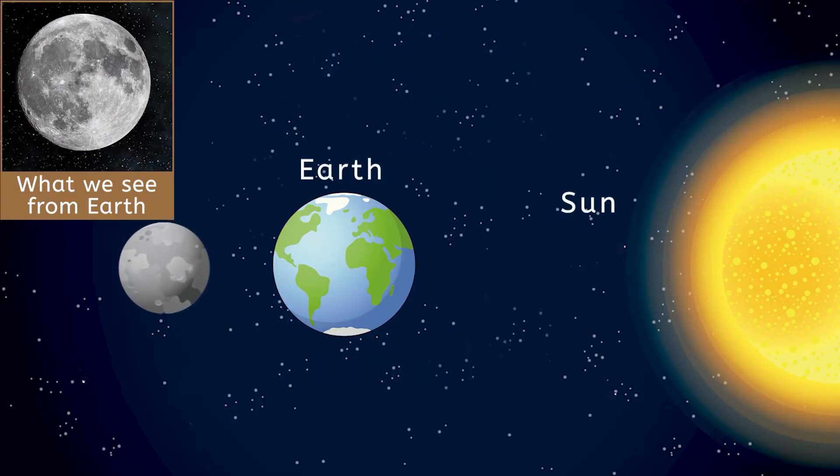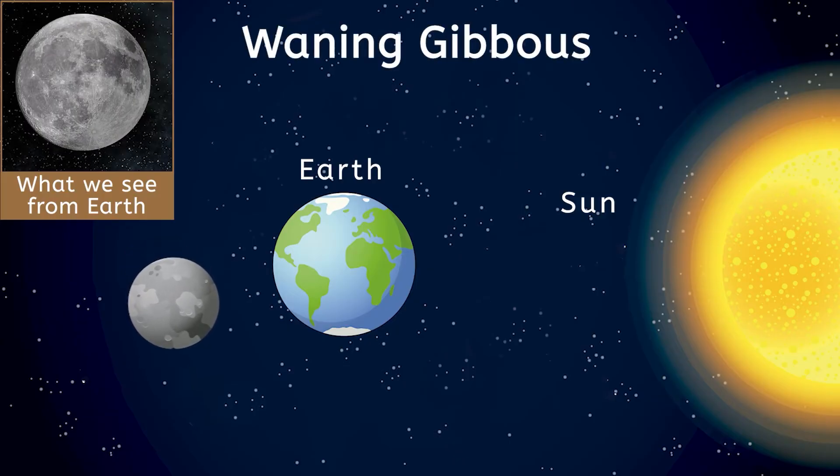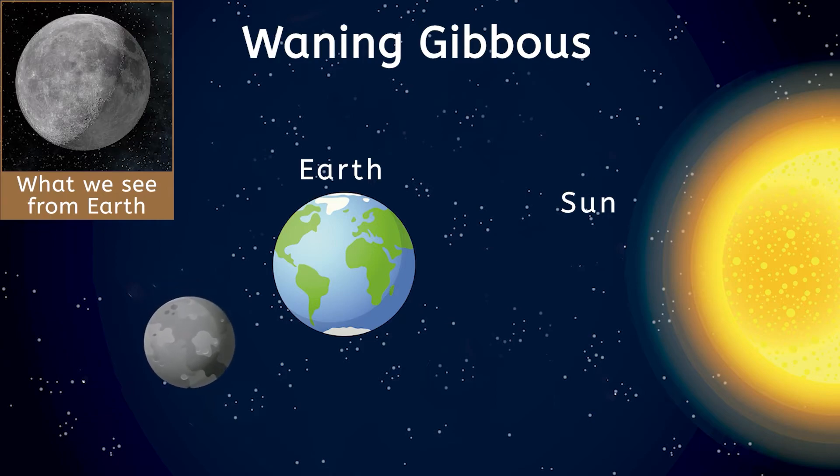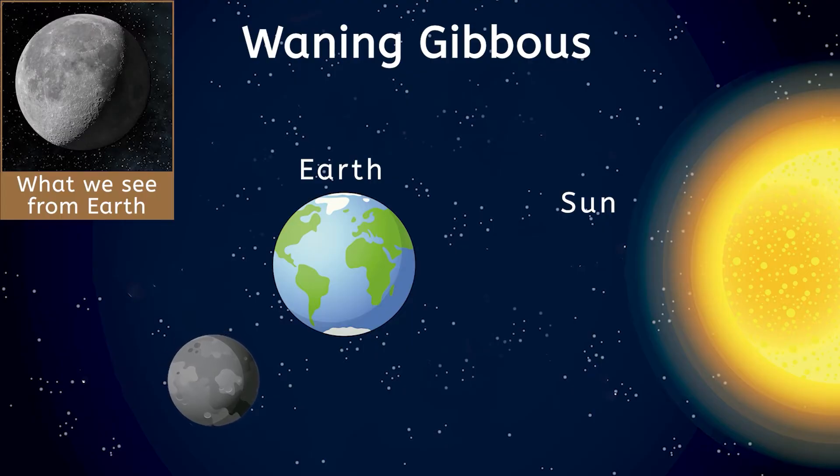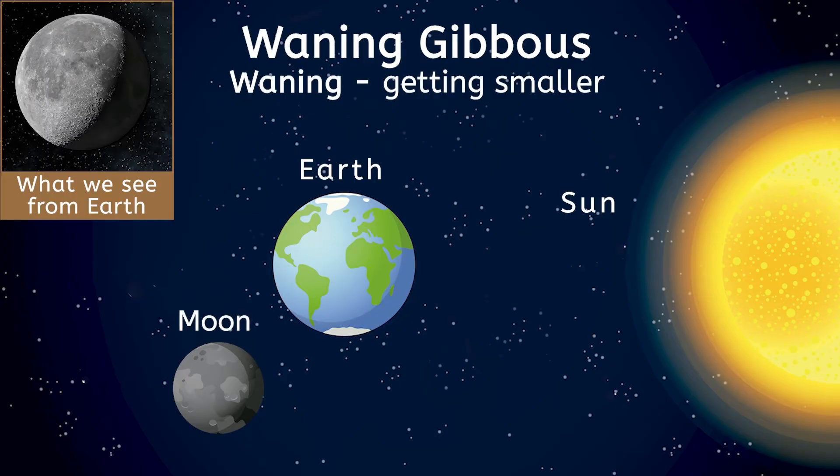After the full moon, the moon's light starts to fade as it enters the waning gibbous phase. So we know that waxing means that the moon is getting bigger. Since we've reached the middle part of the moon's journey around Earth, what do you think waning means? Waning means that the part of the moon we can see is getting smaller each night. The shadow begins to creep in on the right side, indicating the moon is moving back toward the Sun. So if you see the moon getting smaller each night, you're watching it return on its path to a new moon.